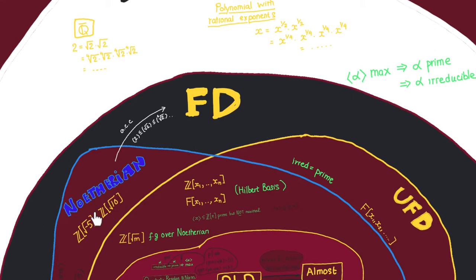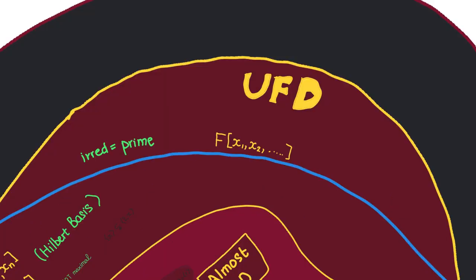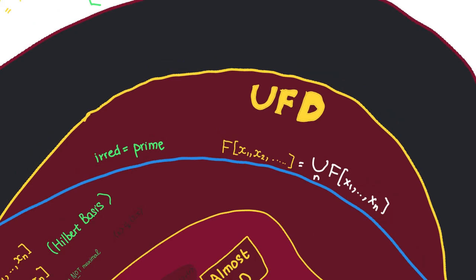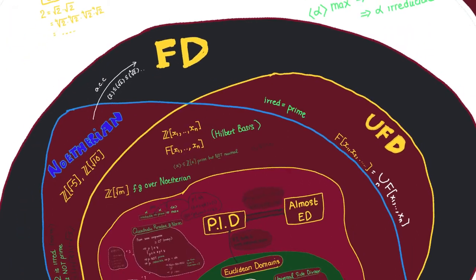We just saw that Artinian domains are not necessarily unique factorization domains. And it turns out that unique factorization domains are not all Artinian either. For example, consider a polynomial ring over a field f. This is a prototype of a non-Artinian ring — it has an ideal that's not finitely generated. But it is a UFD because it's a union of UFDs, and elements in each of those rings must have unique factorization in the big ring.